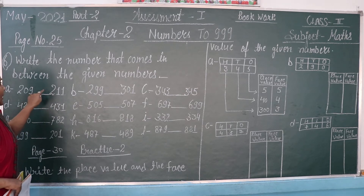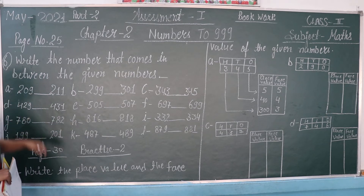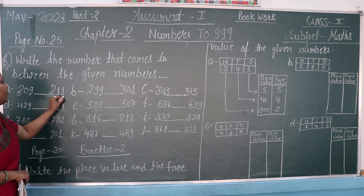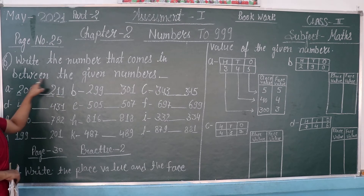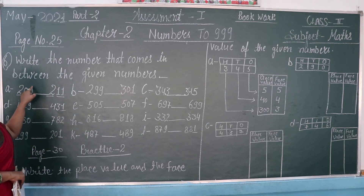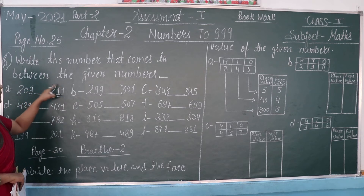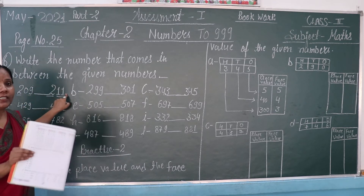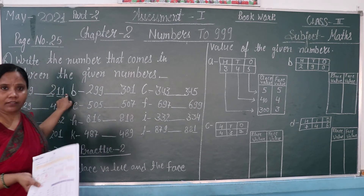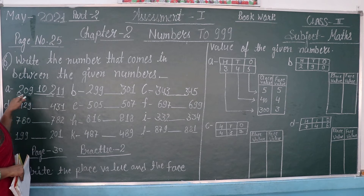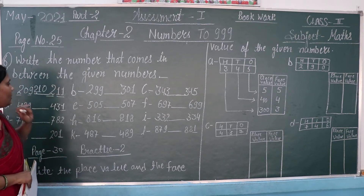Look at the board — there are two numbers and the middle place is blank. You have to write the missing number. This is around the 200 numbers. Now, what is the middle number between 9 and 11? The number between 9 and 11 is 10. So our answer will be 10.